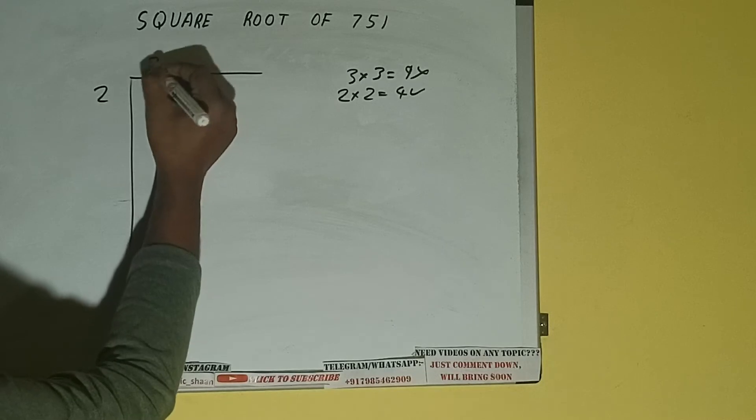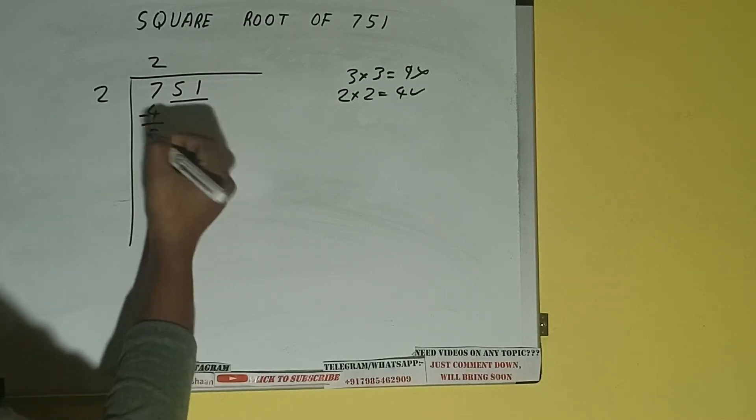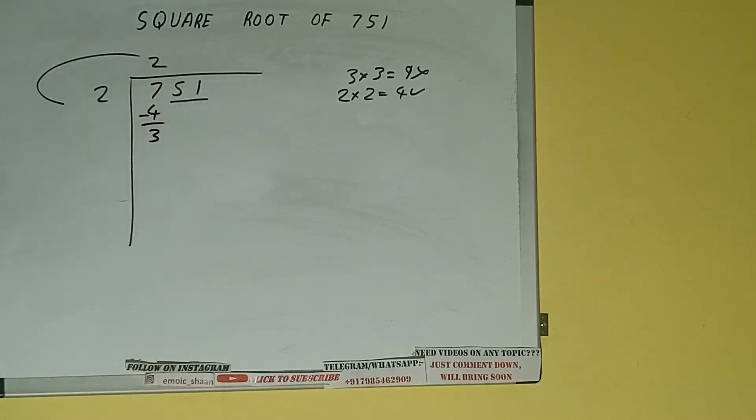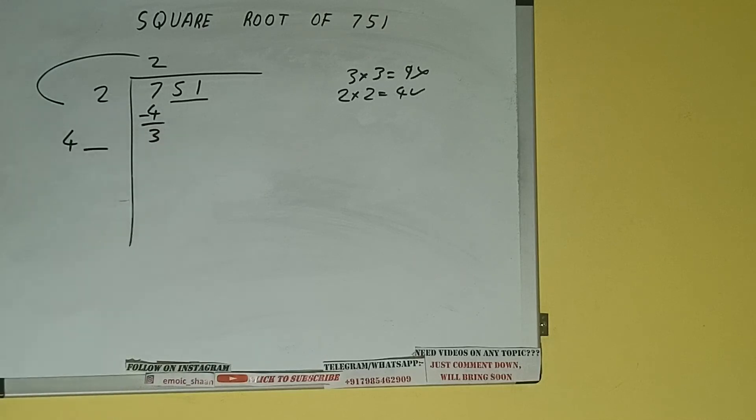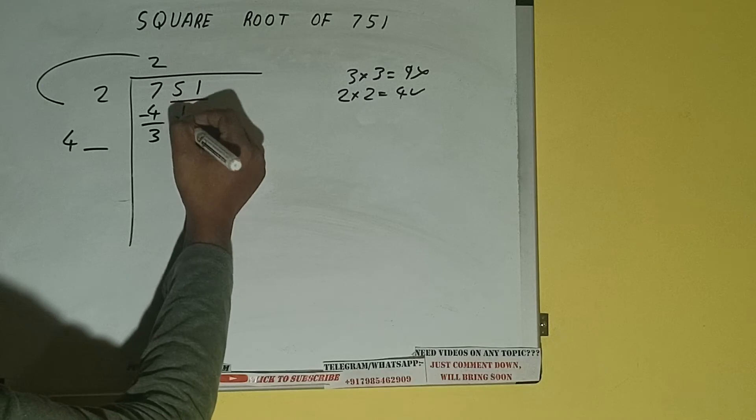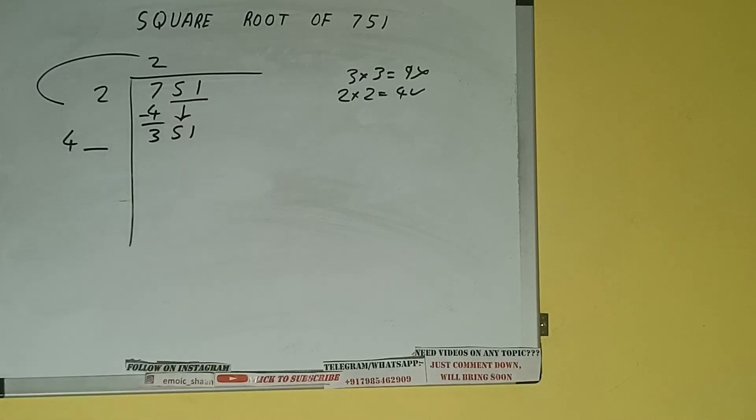So 2 here and 2 here, 4 subtract, 3 will be left. We did 2 times 2, so add both. 2 plus 2 is 4. Write it here and keep a digit extra. This number we need to make bigger. Bring the next pair down and it will be 351.